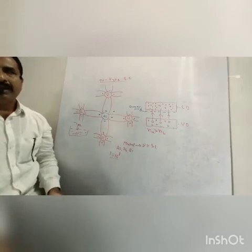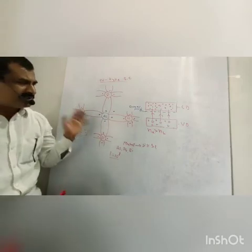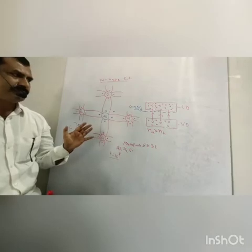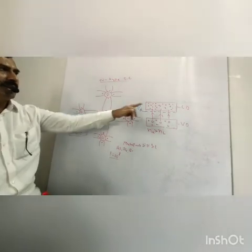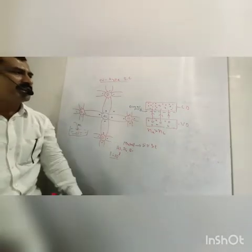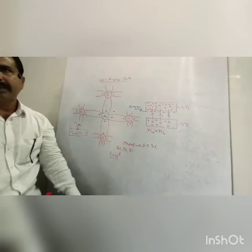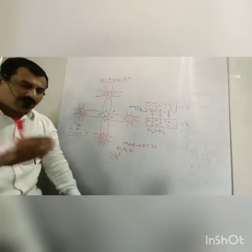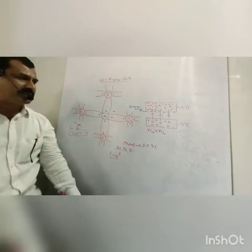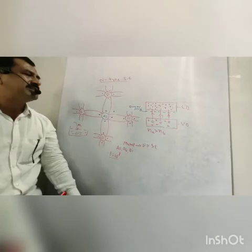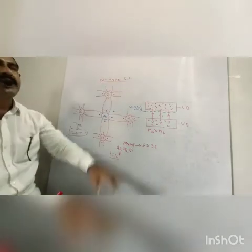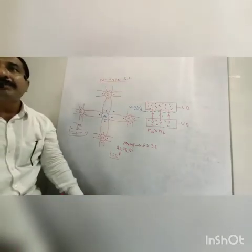This extrinsic semiconductor in which the number of electrons is more than that of the holes, and the electrons are the negative charge carriers, is called an N-type semiconductor.